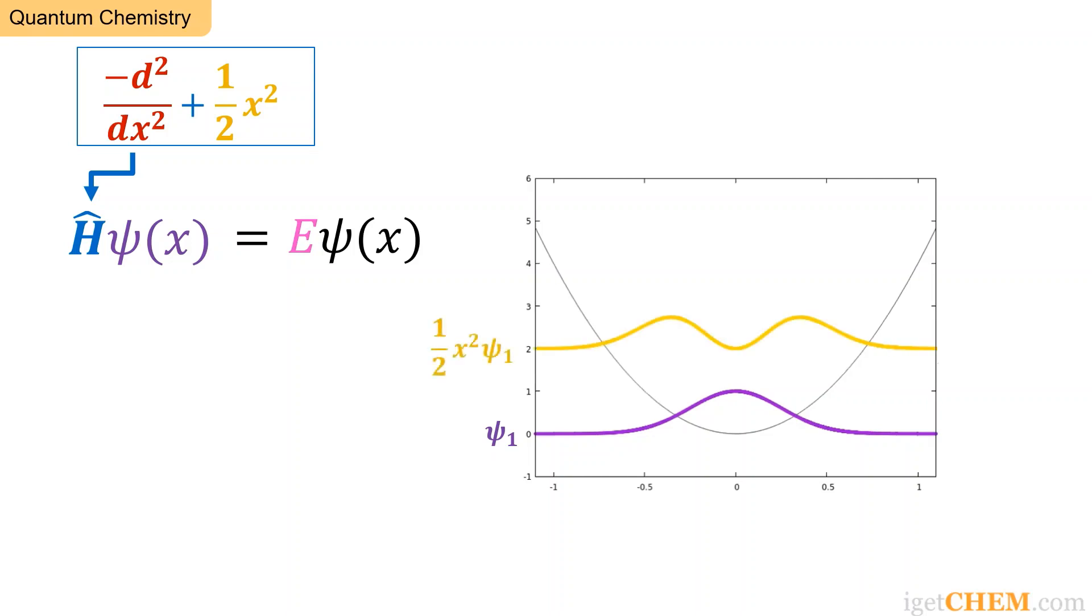We can also calculate minus d squared psi dx squared. This is shown in red. And if we add the yellow and the red curves, we get back psi 1.